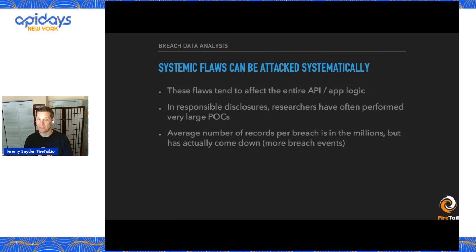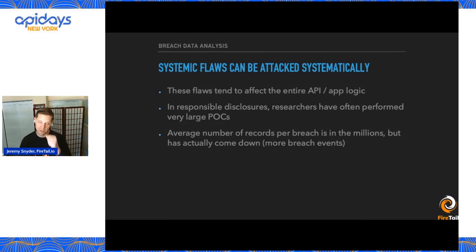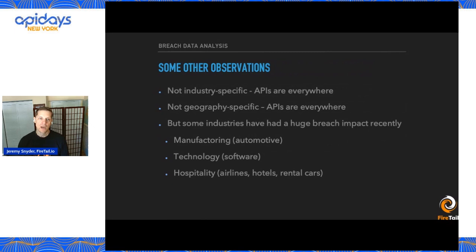The average number of records per breach is still in the millions. If you look at our research and see that number coming down, bear in mind it's coming down as a result of more publicly disclosed API breach events. The volume of breach events has actually picked up quite a bit — in the first couple of quarters of this year, we're on pace to have more events than we did last year.